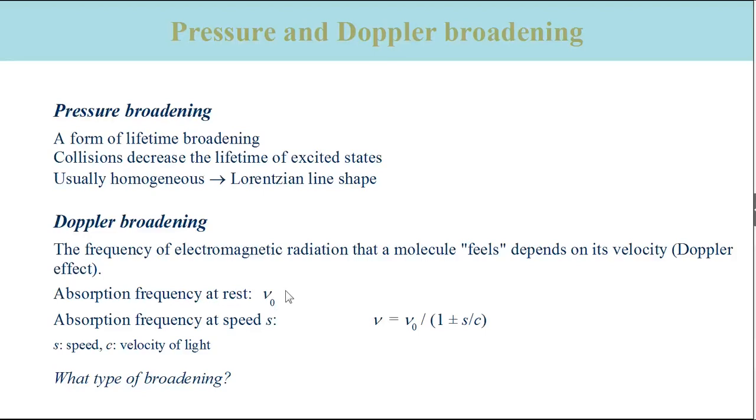If a particle moves away from the source of electromagnetic radiation, the frequency felt by the particle is lower than if it is at rest. To excite the transition, the frequency of the emitted radiation has therefore to be higher than nu 0.